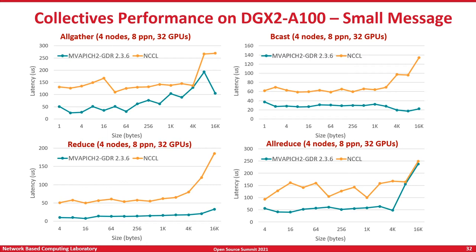Here we look at the performance of collective operations on the DGX2 A100 system — the latest and greatest systems from NVIDIA for HPC, deep learning, and machine learning. It has a very rich communication architecture for intra-node and inter-node communications. Here we compare two popular middlewares for NVIDIA GPU-to-GPU communication: MVAPICH2-GDR and NVIDIA's NCCL. MVAPICH2-GDR is able to outperform NVIDIA's NCCL collective communication library for all the different collective operations that NCCL supports — AllGather, Broadcast, Reduce, and AllReduce — for all sorts of message sizes and different numbers of nodes and processes per node. MVAPICH2-GDR always performs equal to or better than NCCL.